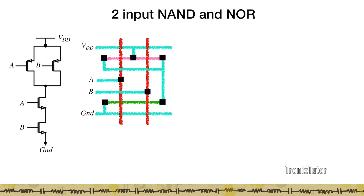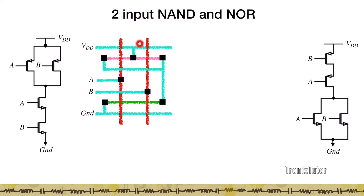For the NMOS in the NAND, we have one n-diff crossing both poly lines, representing two transistors in series. For the PMOS, we take the common node and connect it to VDD, and the other two nodes are shorted and connected to the drain of the NMOS stack, completing the stick diagram for the NAND gate.